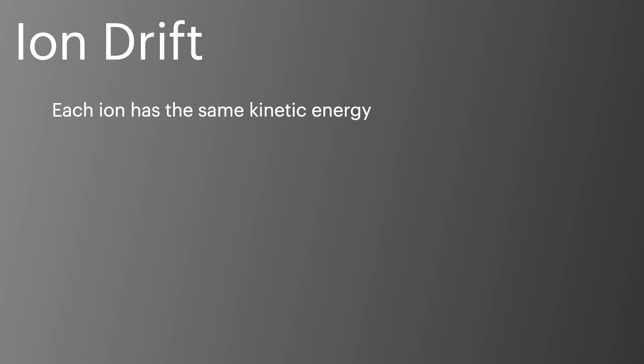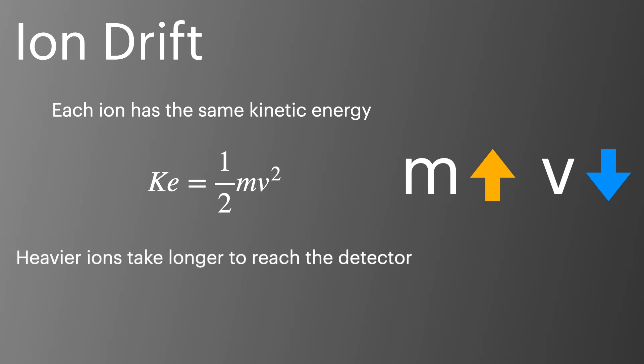All the ions are given the same amount of kinetic energy in the mass spectrometer, and as KE equals half mv squared, as we increase the mass of an ion, we decrease its velocity. This means that the heavier ions take longer to reach the detector, whilst the lighter ions travel faster and arrive at the detector first.